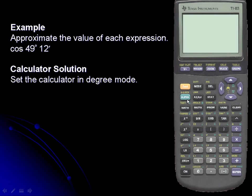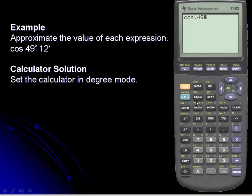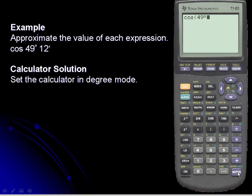Next we'll put in the cosine of 49 degrees. The degree symbol is in the angle function of our calculator — that's second and matrix, which is angle. The degree symbol is our first choice, so we'll simply press enter.